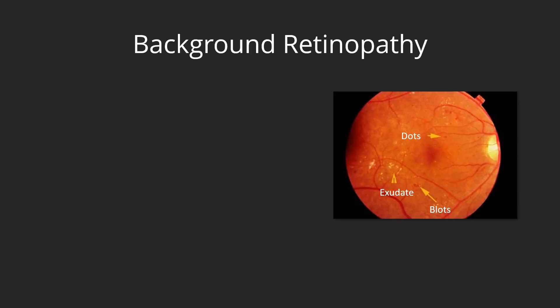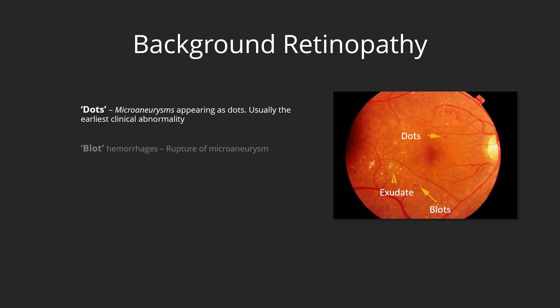Background diabetic retinopathy. The earliest signs of background diabetic retinopathy are microaneurysms and retinal hemorrhages, sometimes called dot and blot hemorrhages respectively. Capillary leakage also occurs in this stage, resulting in lipid deposition, and these are known as hard exudates.